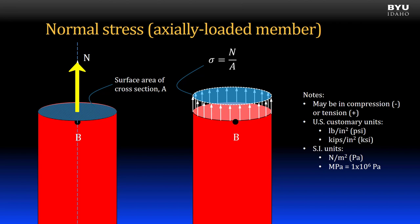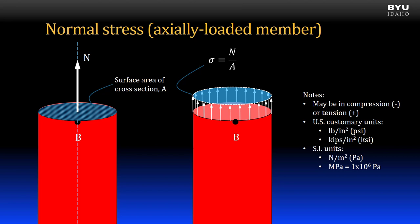We can calculate normal force when we cut a member and find the force that is normal to the cut. Normal stress is equal to the normal force divided by the cross-sectional area of that cut. In this class, we take the cut perpendicular to the longitudinal axis of the member, so the area is the smallest cross-sectional area on the cut surface. We assume the distribution of normal stress is uniform across the full surface.